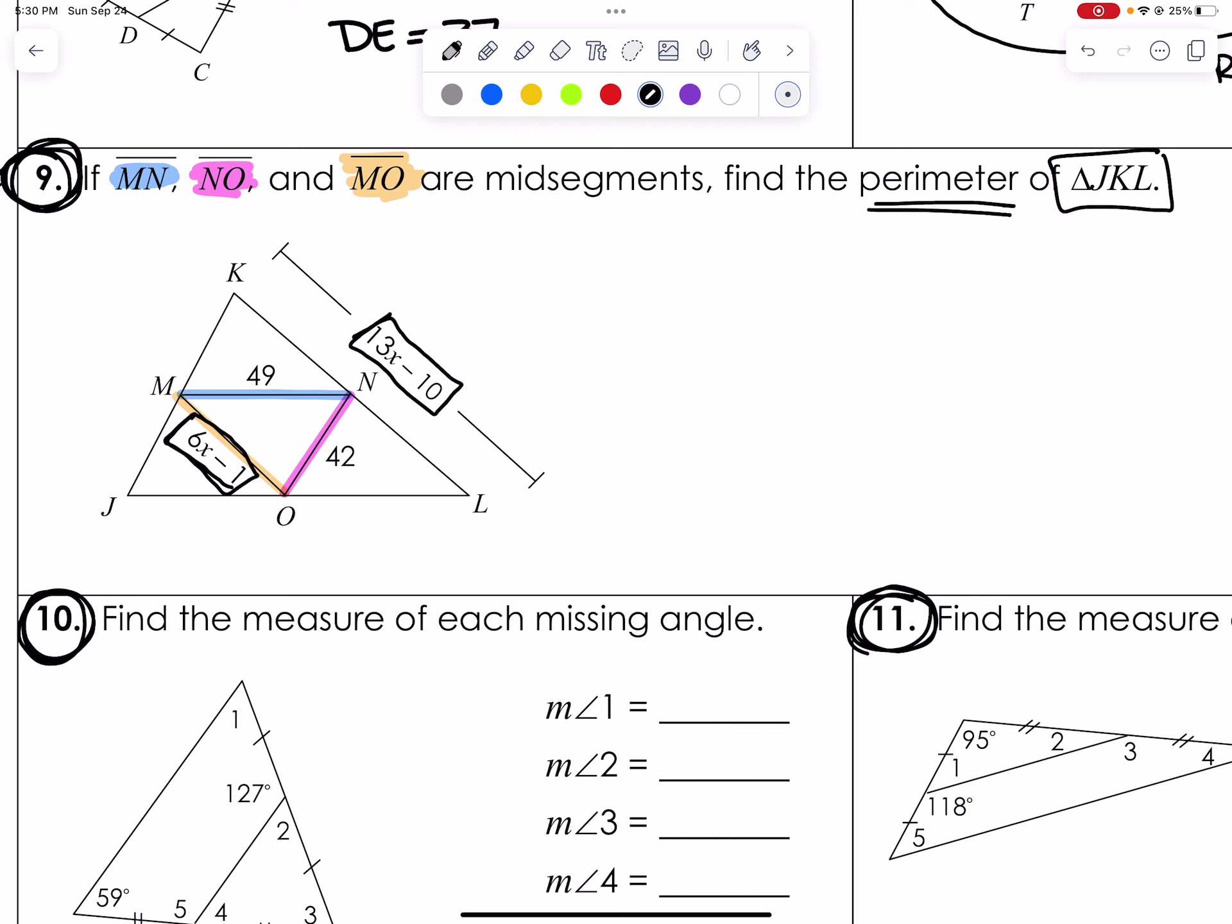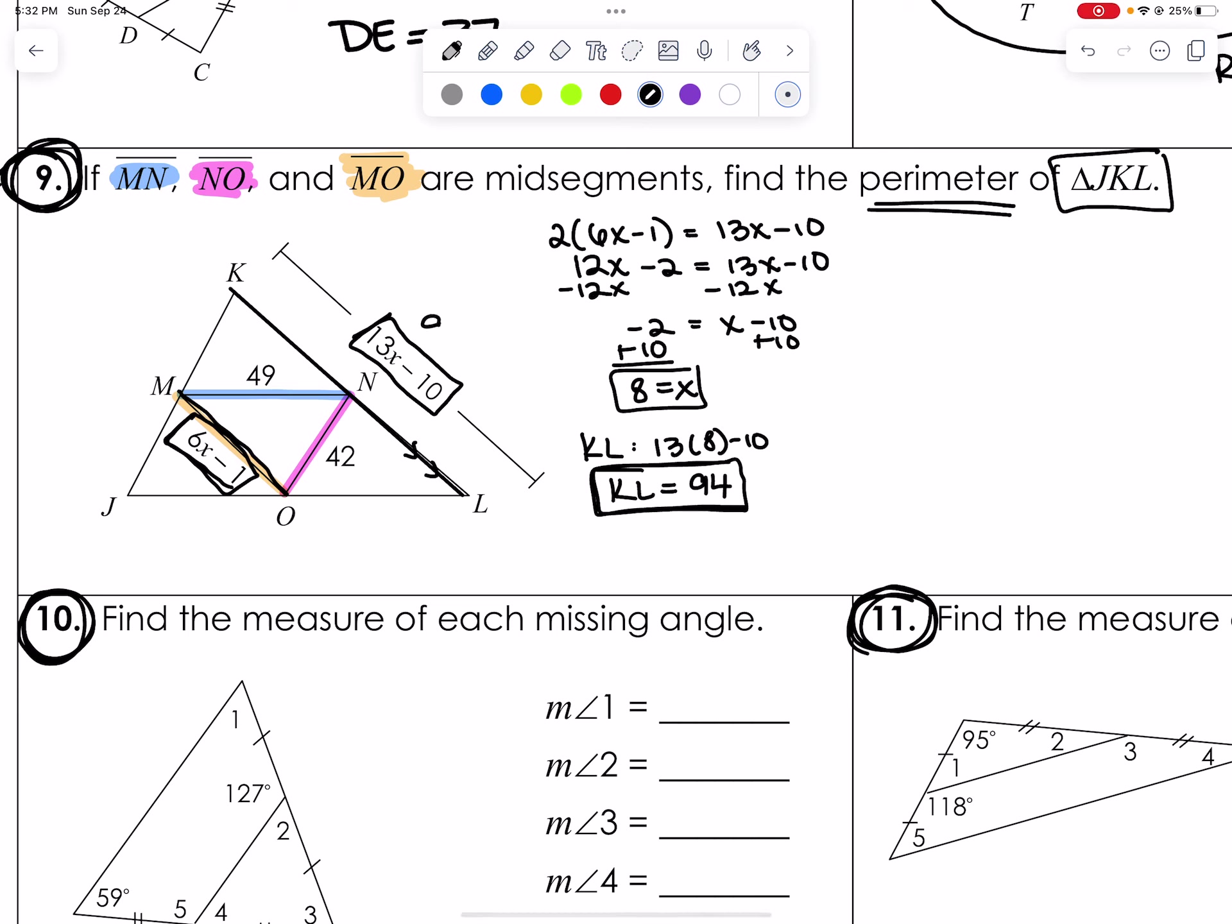So again, I know that since MO is the midsegment, it is going to be parallel to KL, which means it is half of KL. So I can say 2 times 6X minus 1 equals 13X minus 10. I get 12X minus 2 equals 13X minus 10. Do the algebra, I get negative 2 equals X minus 10. Add the 10 on both sides. You get 8 equals X. Now, what do I do with that 8 at this point? I think we should all know that. Plug it in to where you see X. That means that the entire length of KL will be 13 times 8 minus 10 and segment KL will equal 94.